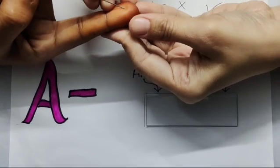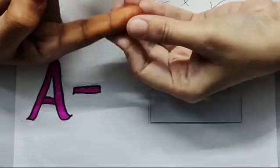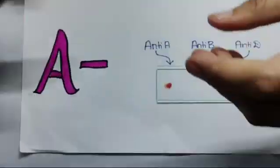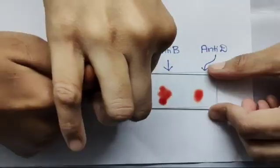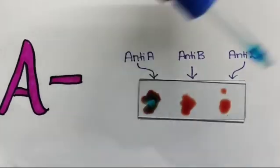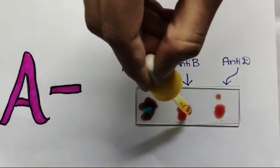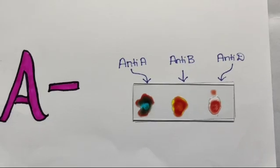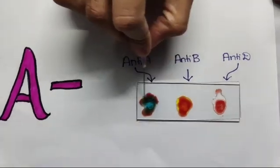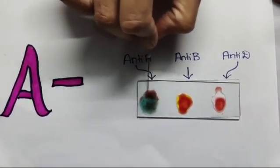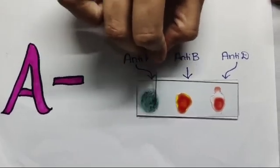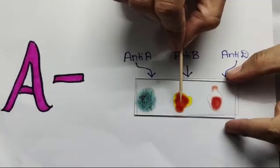Now let's see how to determine A negative blood group. Do the same procedure and check. Clotting is only seen in anti-A and not in anti-B. Hence, only antigen A is present and antigen B is absent. It is A blood group.